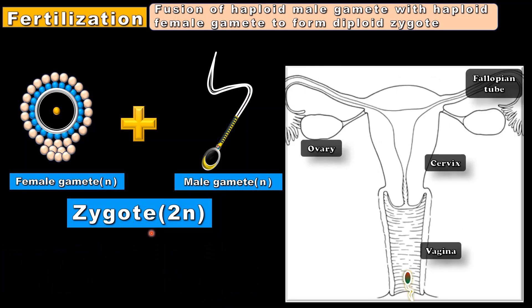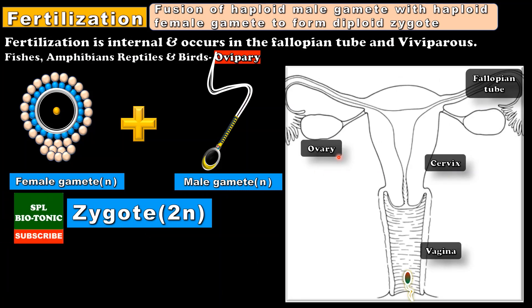This diagram is of the female reproductive system. In human beings, the process of fertilization is internal and it takes place in the ampulla of the fallopian tube.